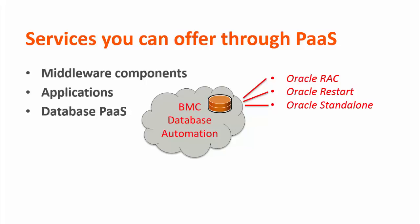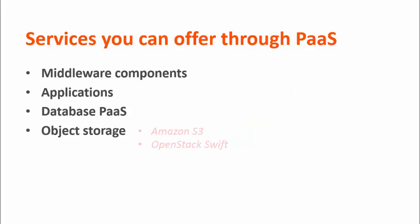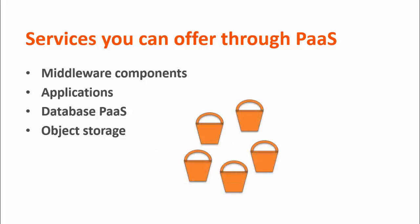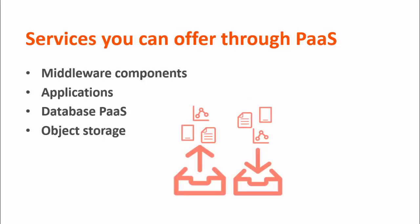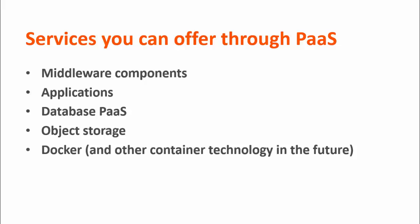Another service is Object Storage, such as Amazon S3 and OpenStack Swift. If you offer object storage as a service offering, users can request storage buckets where they can upload and download data, files, and objects. Note that object storage and middleware, like application servers and web servers, are not supported out-of-the-box. You must provision them as custom containers. And finally, Docker, which you can provision as a custom container, and in the future, other container technology.